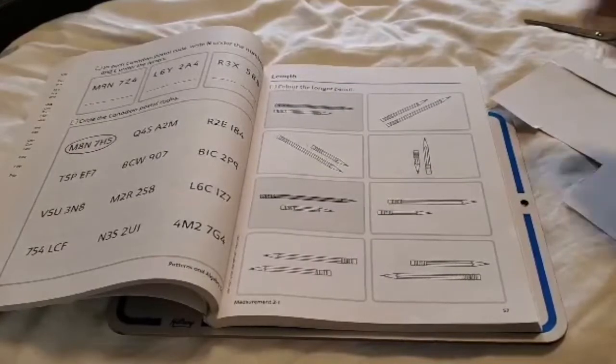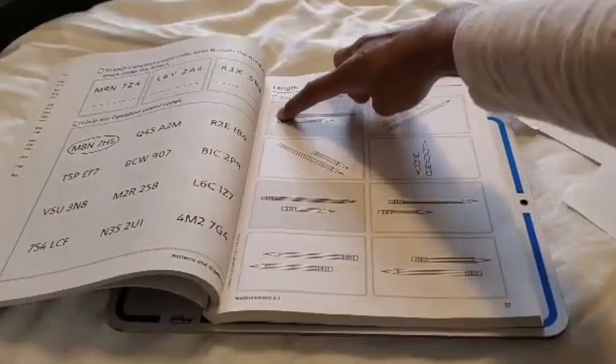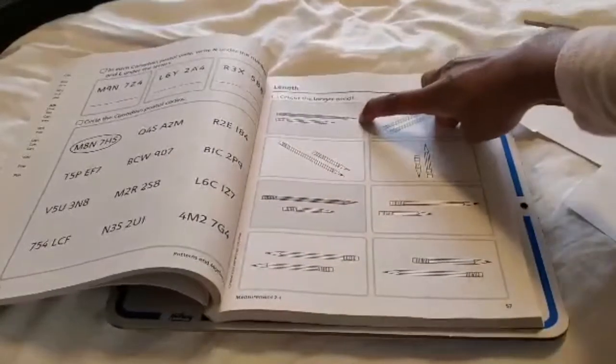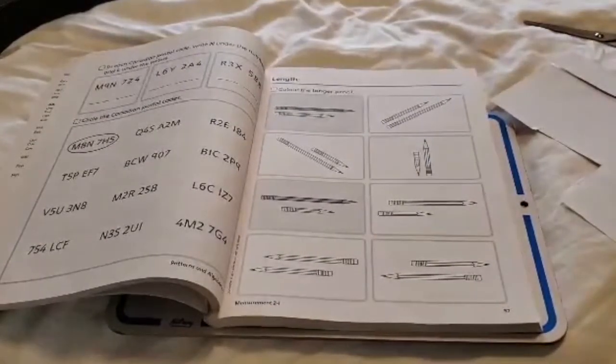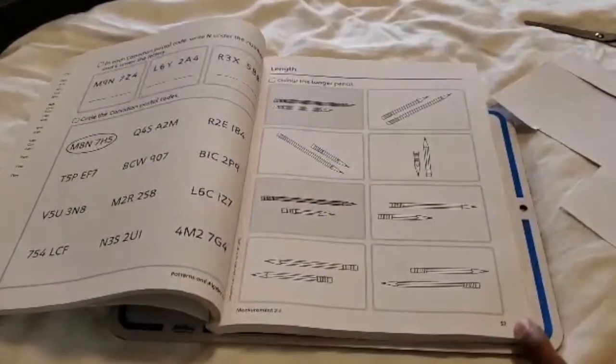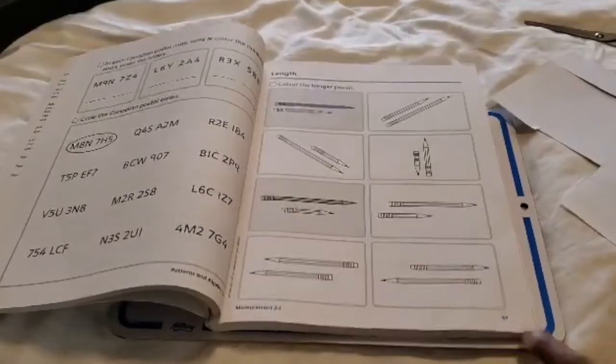When you measure length, you always start from one end and you go all the way across until you get to the other end. On this page, it's page 57 of Jump Math 2.1, and what you need to do...